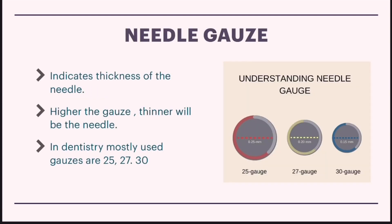Needle gauge indicates the thickness of the needle — the higher the gauge, the thinner the needle. As seen in this diagram, the 30 gauge needle is thinner than the 27 gauge needle, and the 27 gauge needle is thinner than the 25 gauge needle. In dentistry, we mostly use 25, 27, and 30 gauge needles.